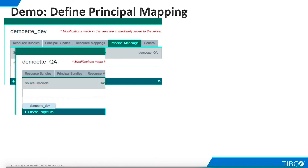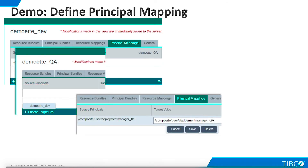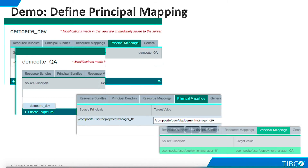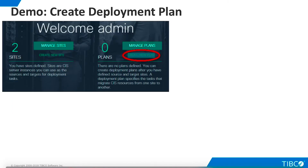Principal mapping is very similar to resource mapping. We select the target site and enter a new value for the user name. Here we change the name from DeploymentManager01 to DeploymentManagerQA. We save, and the principal mapping is complete.